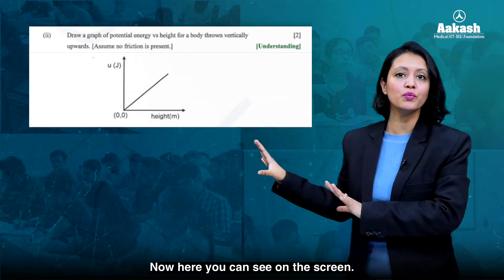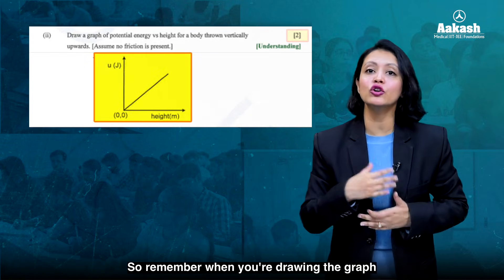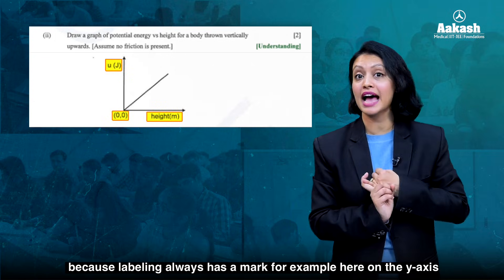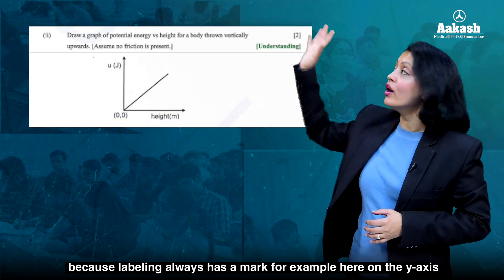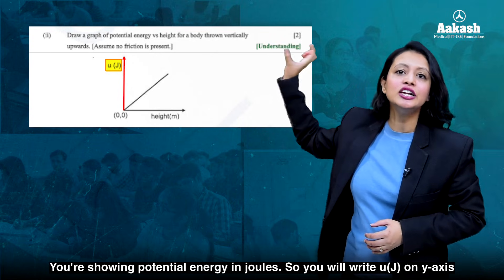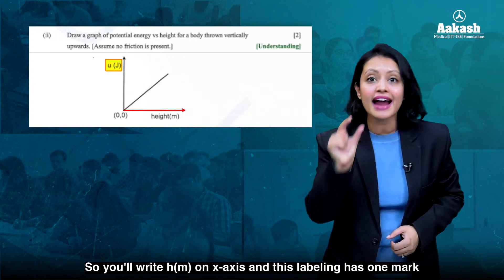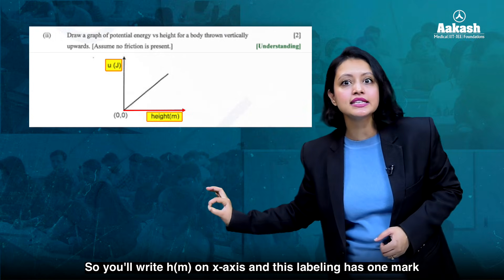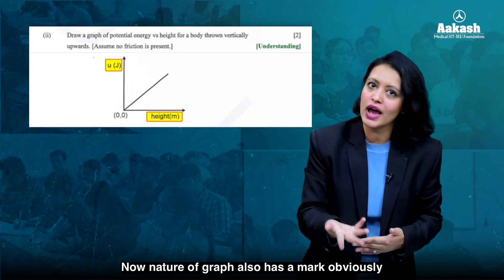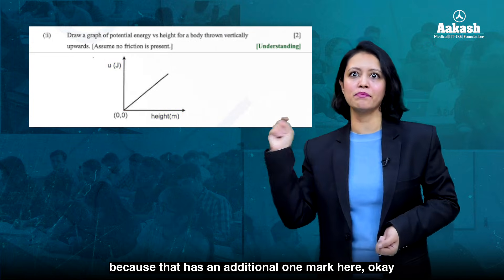Here on the screen you can see a two-mark question in which you have to draw the graph. When drawing the graph, proper labeling must be done because labeling always carries a mark. For example, on the y-axis you're showing potential energy in joules, so you write U(J) on the y-axis. Similarly, you're showing height in meters on the x-axis, so you write H(m) on the x-axis — this labeling has one mark. The nature of the graph also has a mark, so draw the graph correctly.